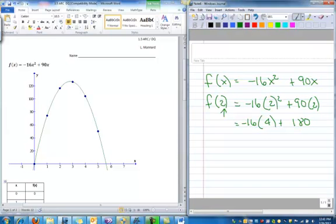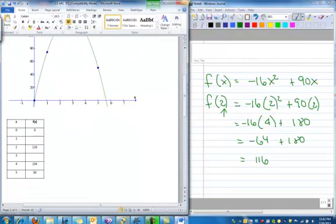Before I add them together, I have to multiply the negative 16 times the 4. When I do that, I get negative 64. Now I'm ready to add them together. And when I do that, I get 116. So that's how I got the 116 here. And if you want to pause the video, you can go ahead and calculate f of 1 and calculate f of 3.